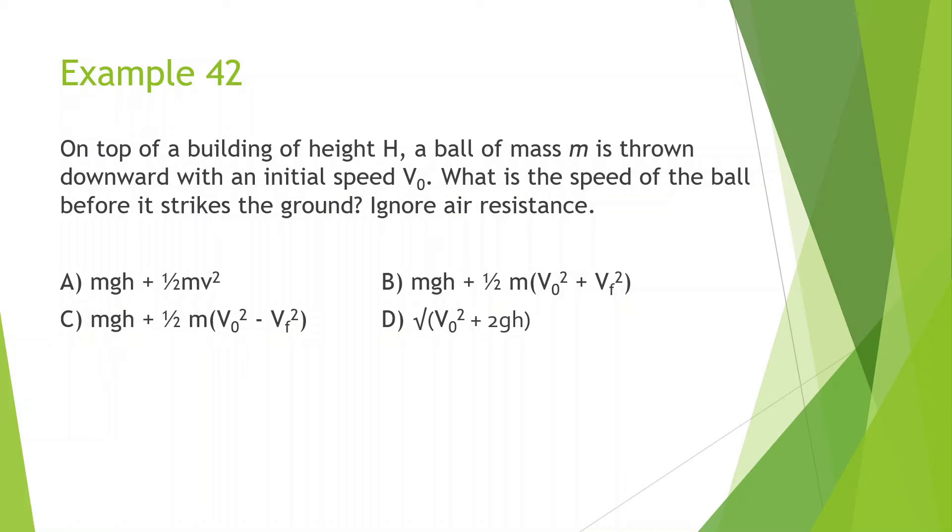Let's look at example 42. On top of a building of height h, a ball of mass m is thrown down with initial speed v initial. What is the speed of the ball before it strikes the ground? Ignore air resistance. So let's look at this problem here. We have a ball being thrown down with initial velocity. It has a height of h. And we're looking for the speed down here. So let's think about everything we know at the beginning, and then everything we know at the end.